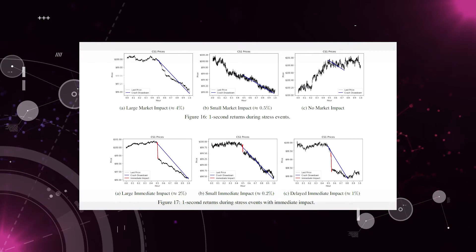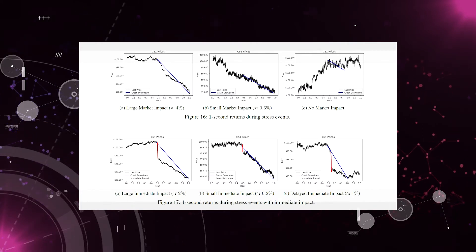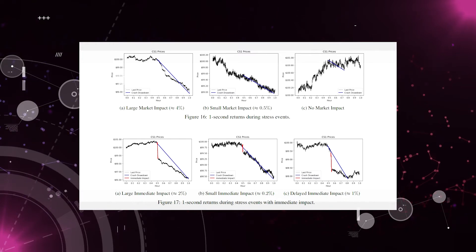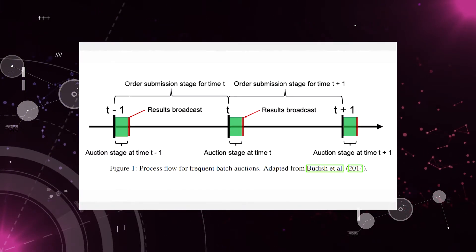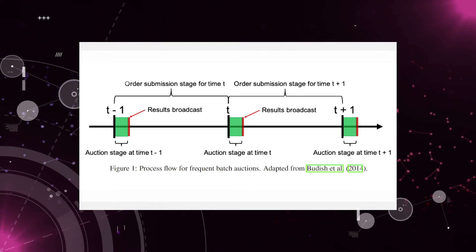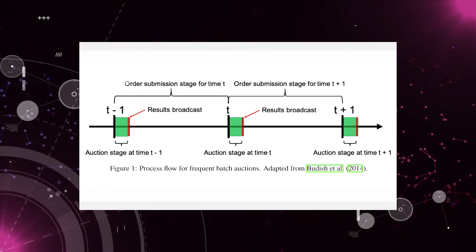In the first paper we published using SHIFT, we showed that the resulting price process has all the stylized statistical facts of the real price process. We also showed how to create micro flash crashes and other financial events using specific algorithmic trading behavior.